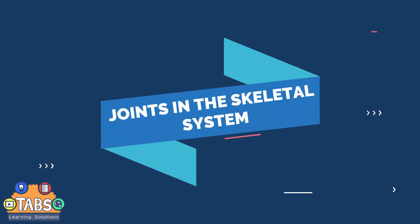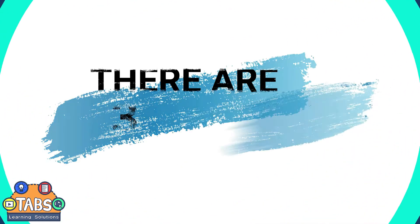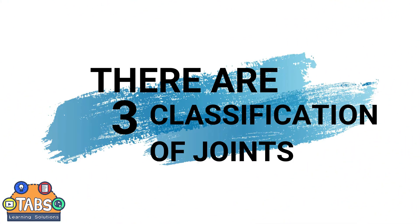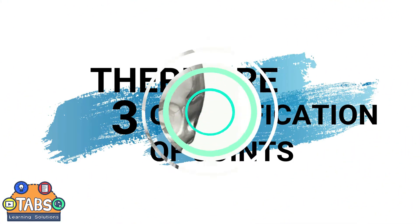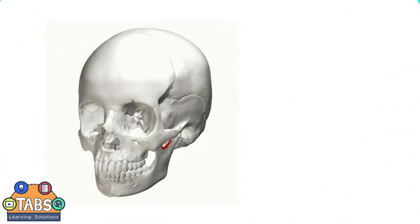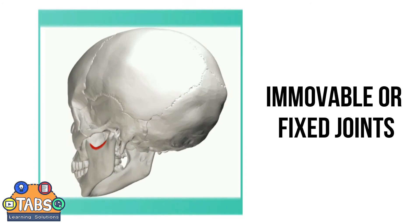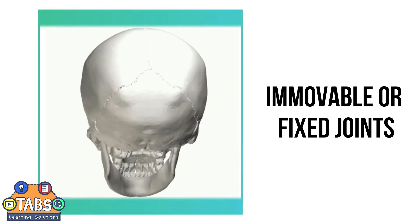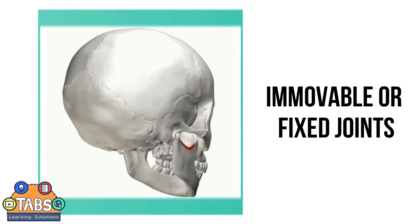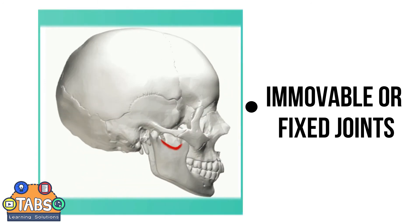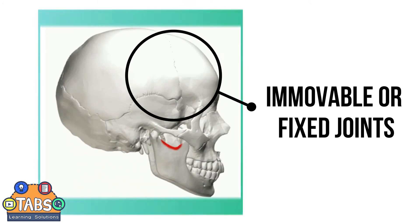Joints in the skeletal system. There are three classifications of joints. The first one is the immovable or the fixed joints. They help protect the brain and they are found in the skull.